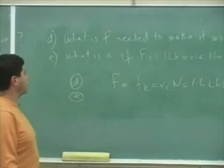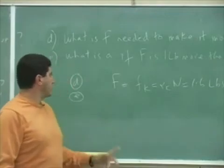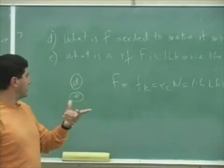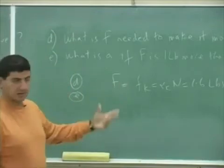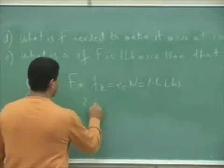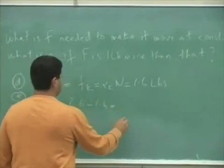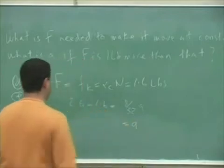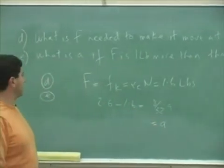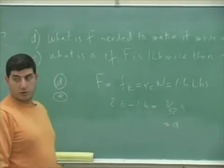if F is one pound more than 1.6, so it's now 2.6, so 2.6 minus 1.6 equals 8 over 32A, and we have now 4, basically, right?